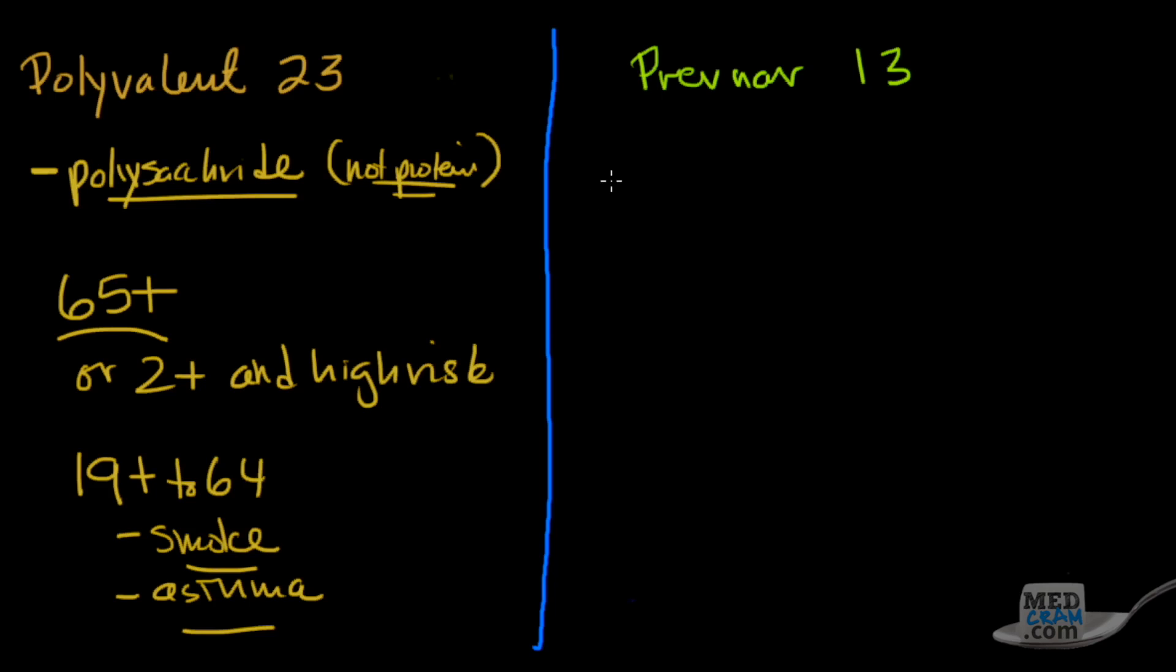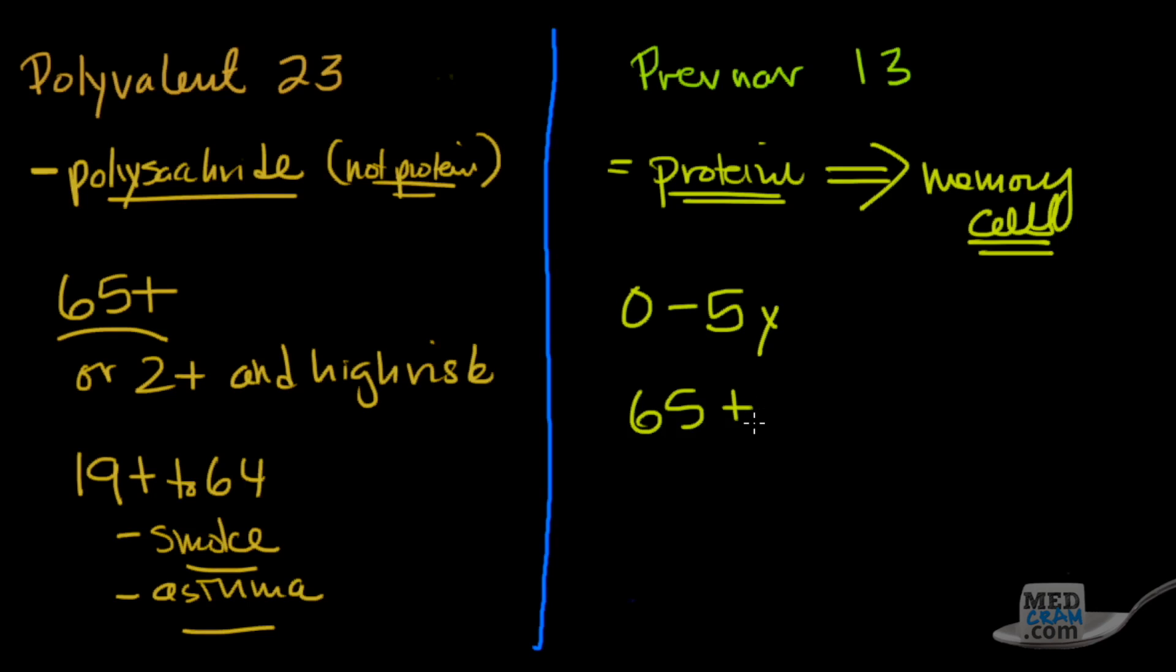Now the Prevnar has a diphtheroid protein in it, and what that means is you get memory cells. So that's pretty good. It's currently recommended for all children younger than 5 years old, so from 0 to 5 years of age, and all adults 65 plus. This has been a recent thing here in 2014, that anyone 65 years or older get it, and people who are 6 to 64 if they have certain medical conditions.